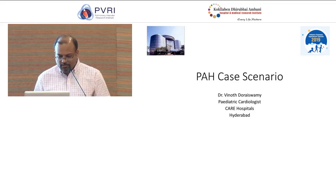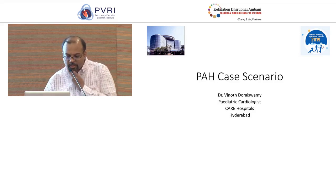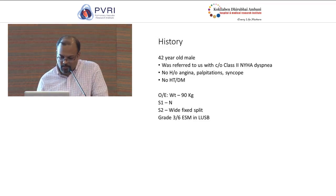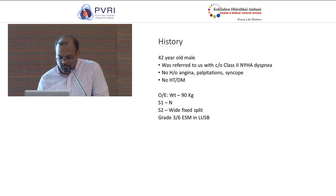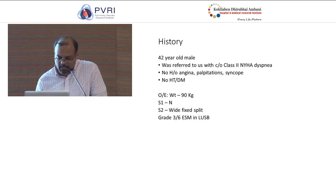Our patient is an adult, a 42-year-old male. He was referred to us with complaints of NYHA class 2 dyspnea. There was no history of angina, palpitations, syncope, hypertension, or diabetes mellitus. He was obese with a weight of 90 kilos. Examination showed S1 was normal with a wide fixed split and an ejection systolic murmur on the left upper sternal border.